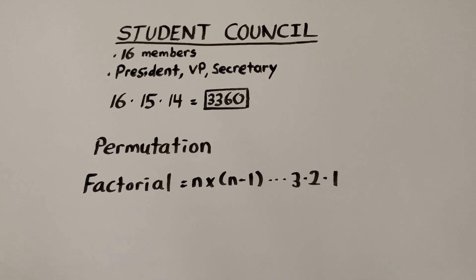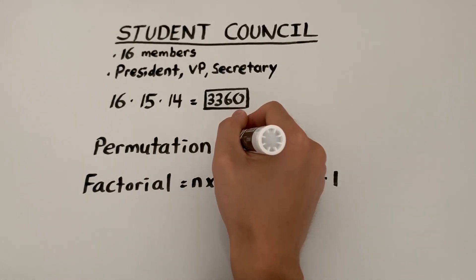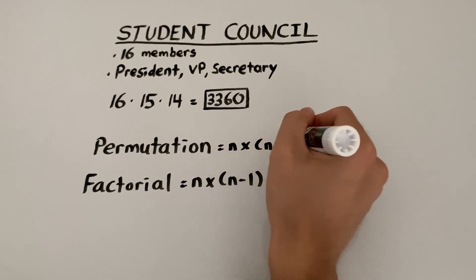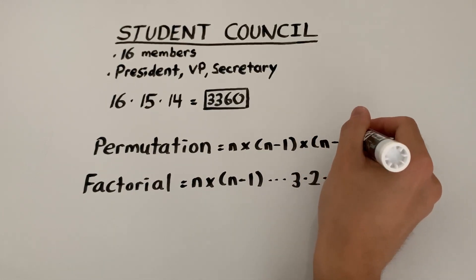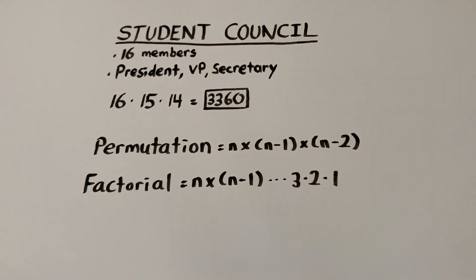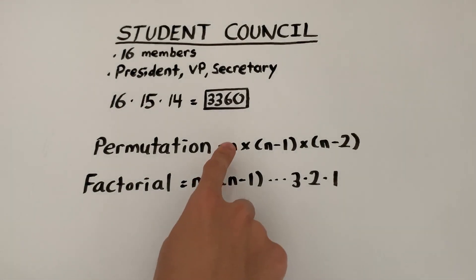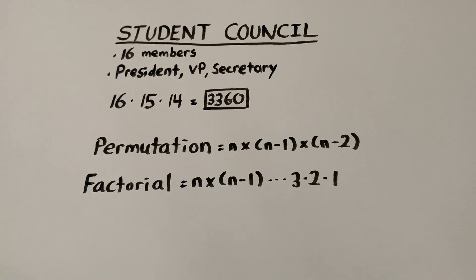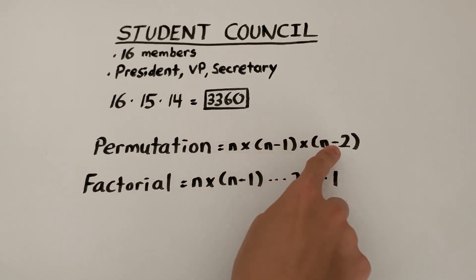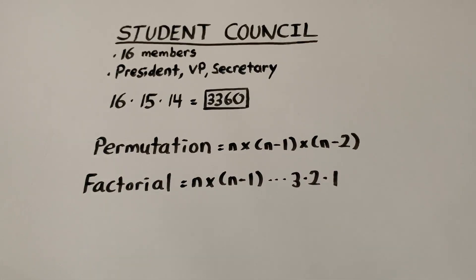An example of a permutation would look like this: instead of going all the way down to 1, it starts with n, then n-1, and stops at n-2. In this example n is 16, so the result is 16 times 15 times 14 and it just stops there. A permutation only uses up some of your choices, while a factorial uses all of them — so a factorial is a very special kind of permutation.